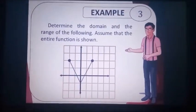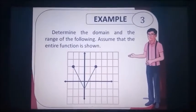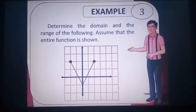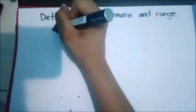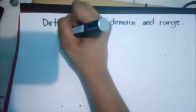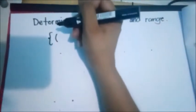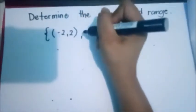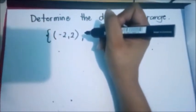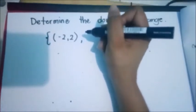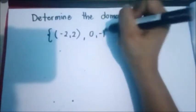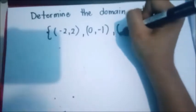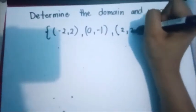Identify the domain and the range. You must know all the ordered pairs that correspond in the given. Let us now list all the ordered pairs. We have negative 2 and 2. We also have 0, negative 1. Then last, we have the point 2 and 2.